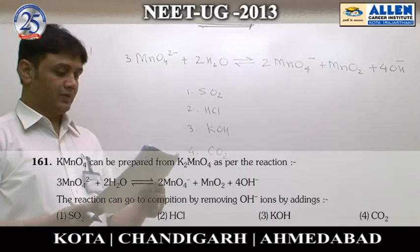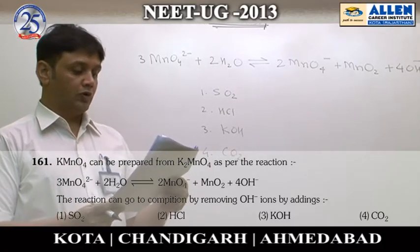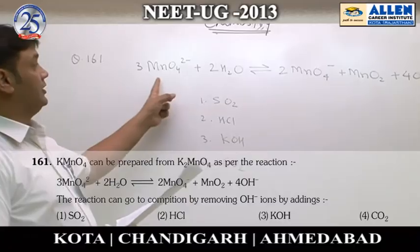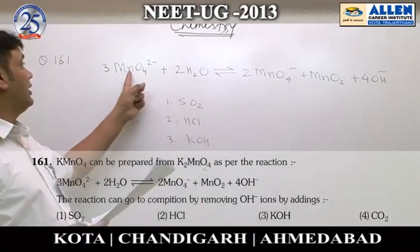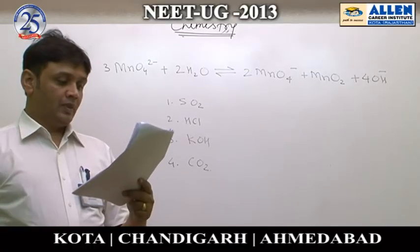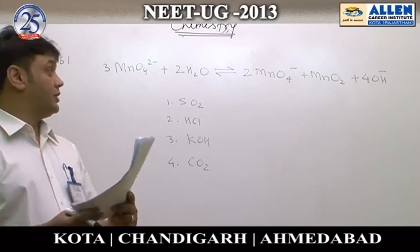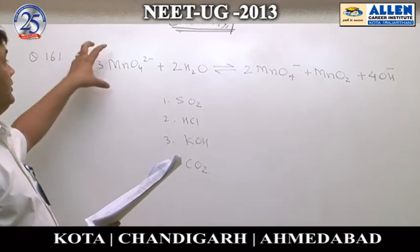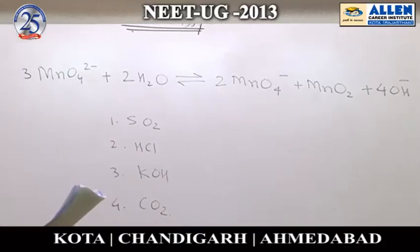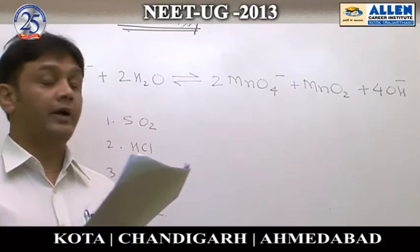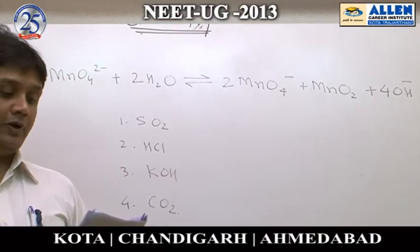Question number 161. It says that KMnO₄ can be prepared from K₂MnO₄, and this is the reaction from which we can prepare KMnO₄ from K₂MnO₄. We are saying that the reaction can go to completion by removing OH⁻ ions. If we want to proceed the reaction in the forward direction, then the OH⁻ ions need to be removed by an appropriate reagent. We are asked what is the appropriate reagent.